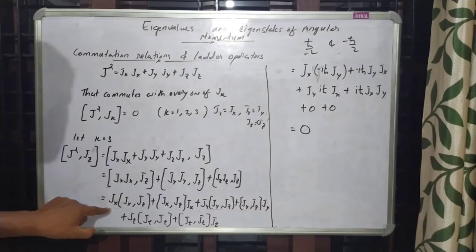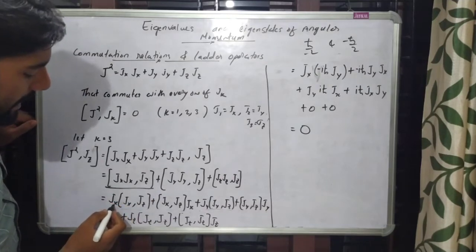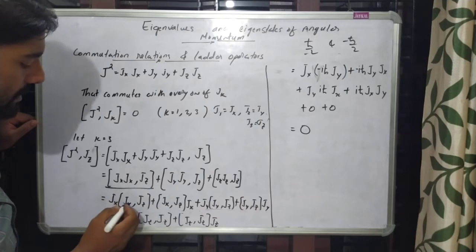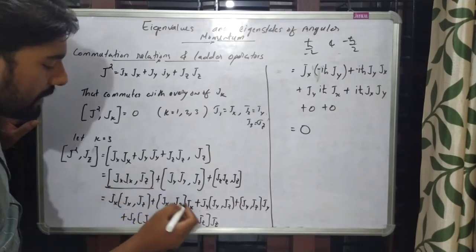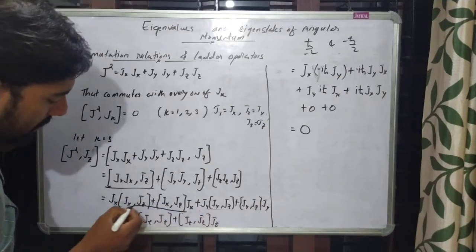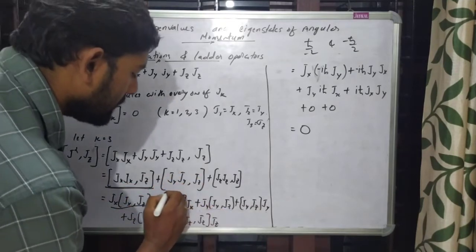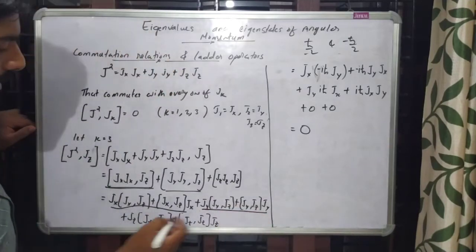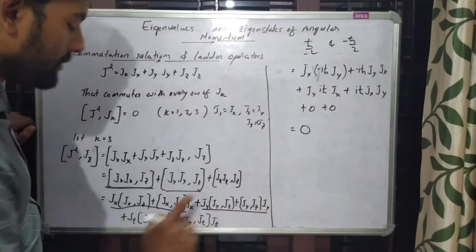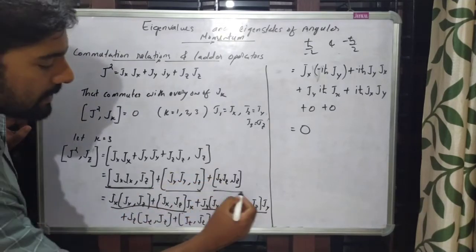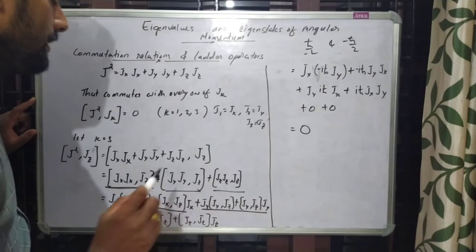Each commutator bracket can be expanded further. The first term expands as Jx[Jx, Jz] plus [Jx, Jz]Jx. Similarly, the second bracket expands as Jy[Jy, Jz] plus [Jy, Jz]Jy, and the third commutator bracket is [JzJz, Jz], which gives JzJzJz plus JzJzJz.